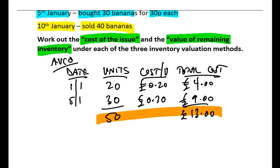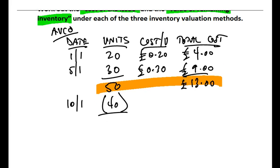And indeed on the 10th of January we've got our sale of 40 bananas, which as we can fairly quickly identify means that we do have 10 bananas left, so we've got 10 units. And again if you've already done FIFO and LIFO what you'll probably have noticed is that the units are the same each time. You can imagine the actual number of bananas doesn't change—it's the values and the costs that do differ depending on your method.